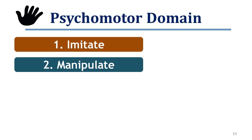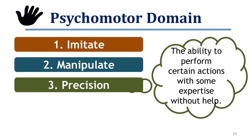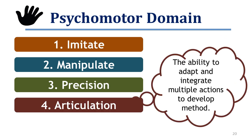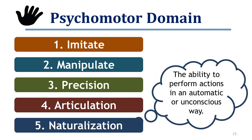The third level is precision, where one develops the ability to perform certain actions with expertise and without help. The fourth level is articulation — developing the ability to adapt and integrate multiple actions to create one method or system to meet novel requirements, at which point your skills are well developed. The last level is naturalization — the ability to perform actions in an automatic or unconscious way, where your performance is flawless with little or no effort.